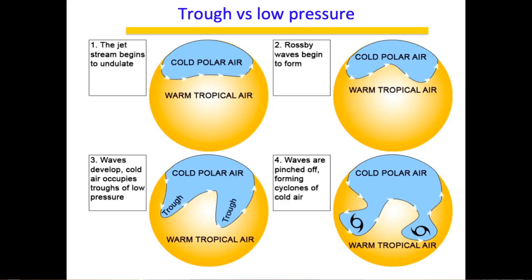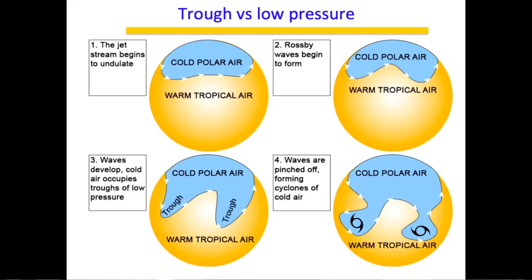Troughs are associated with cloudy weather conditions because they lead to updrafts. As the undulation increases, systems pinch off from the parent parcel to form either a low pressure or a high pressure. The key difference is that a trough is a moving wave pattern that travels along the globe's circumference, whereas low and high pressure systems pinch off and affect a particular area.